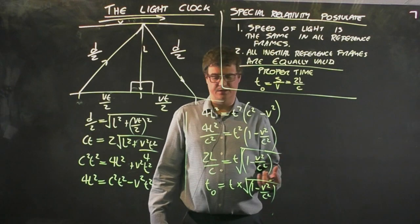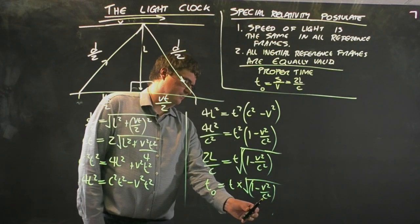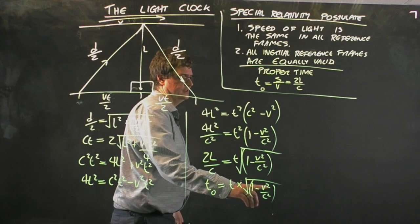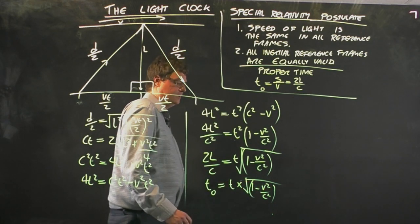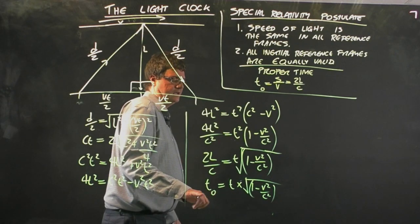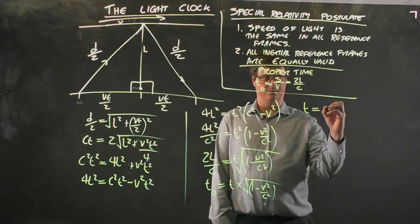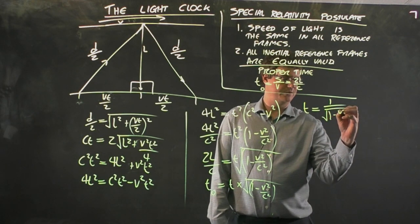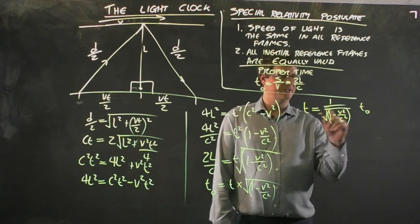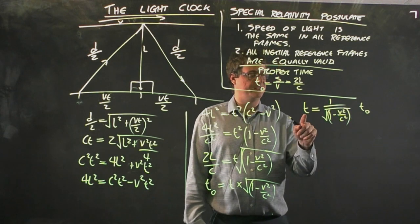This T is the measured time by the moving observer. It's a dilated time. C is a fixed number, 300 million meters a second. You're not allowed to move faster than that, so V must be a number less than C. If V is less than C, then this is some number less than 1. 1 take a number less than 1 is a small decimal number. The square root of a small decimal number is a smaller decimal number, and so this says that the proper time is smaller than the measured time.